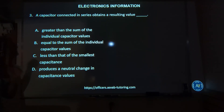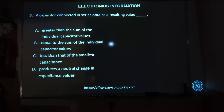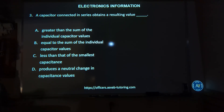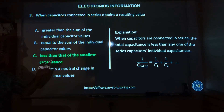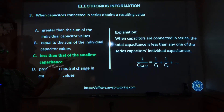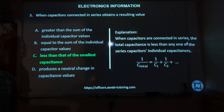Number three: a capacitor connected in series obtains a resulting value — A, greater than the sum of the individual capacitors; B, equal to the sum; C, less than the sum of the smallest capacitance; or D, produces a neutral change in capacitance values. The correct answer is C, less than that of the smallest capacitance. When capacitors are connected in series, the total capacitance is less than any one of the series individual capacitances.